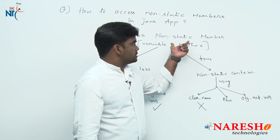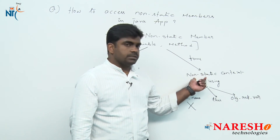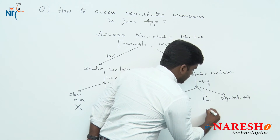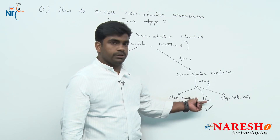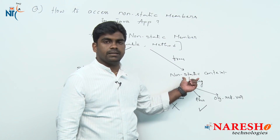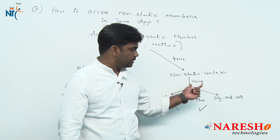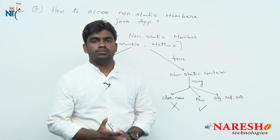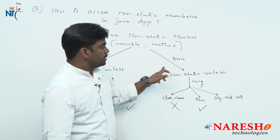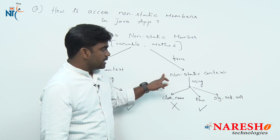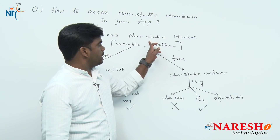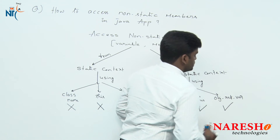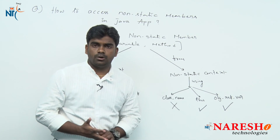If you want to access a non-static member from a non-static area, you can use 'this' — because the 'this' keyword is valid inside the non-static area — and you can also use an object reference variable. So from the non-static area, both options are available.